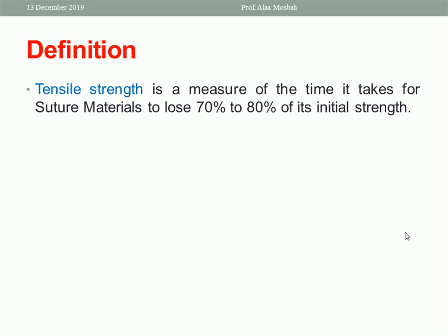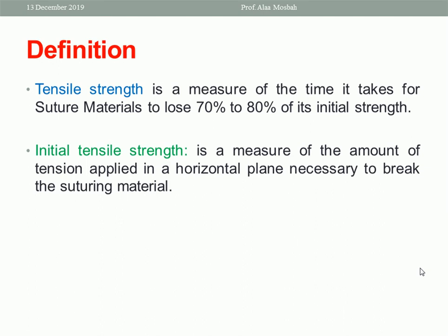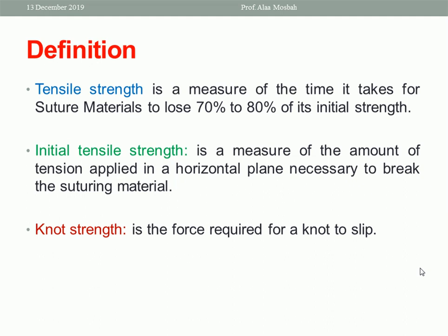We should know what is called tensile strength, which is a measure of the time it takes for suture materials to lose 70 to 80 percent of its initial strength. Initial tensile strength is a measure of the amount of tension applied in a horizontal plane necessary to break the suture material. Knot strength is the force required for a knot to slip.